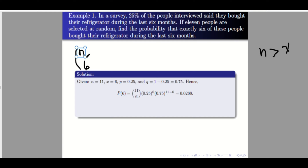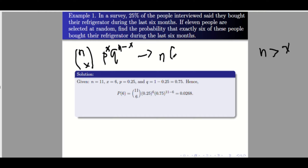Using the formula n taken x, times p to the x, times q to the n minus x — on your calculator you may use: nCx times p to the x times q to the n minus x. This combination part is 11 C 6.